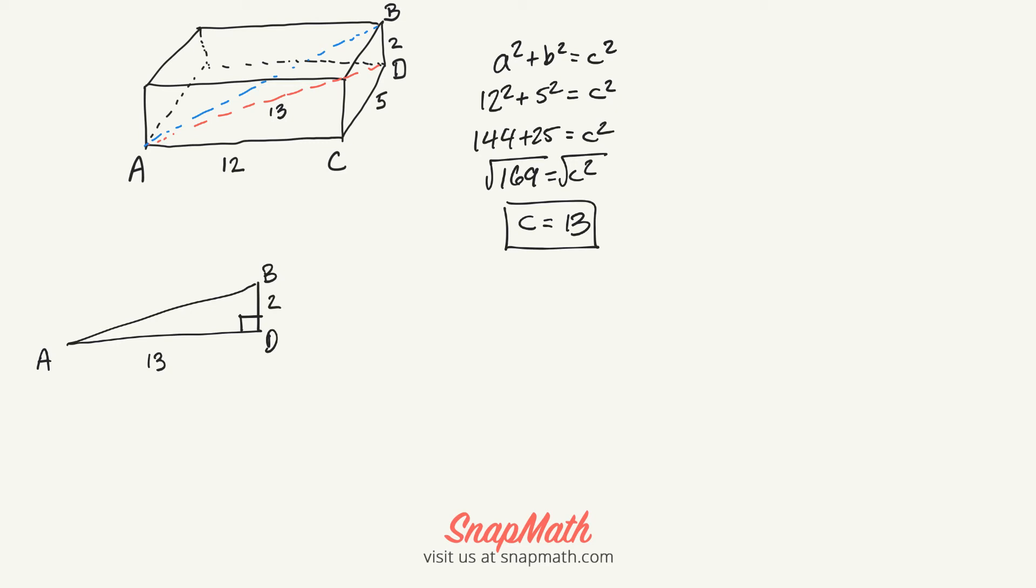Again, we're going to use the Pythagorean theorem to find what AB is. So this would be 13² + 2² = C².